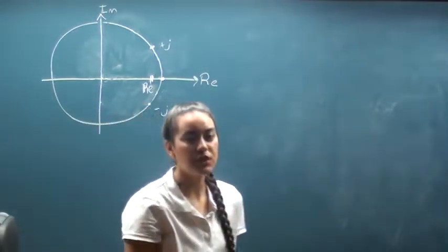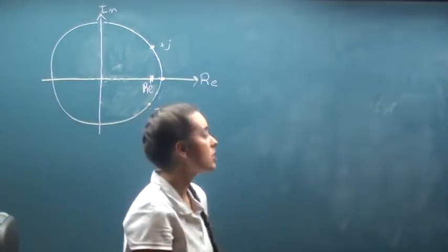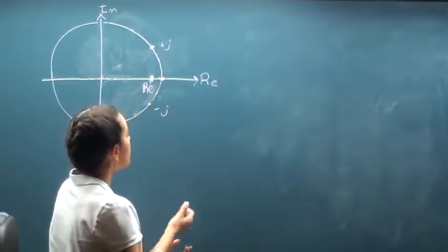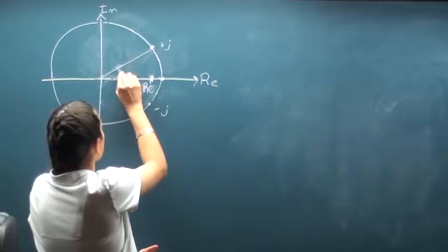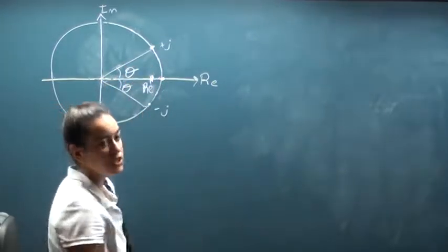We have defined this because we have already solved for the exponential form of the Fourier series, so we know that we can find these two complex conjugates to define the real value.